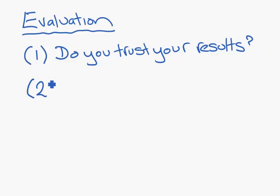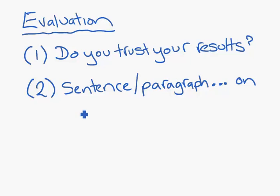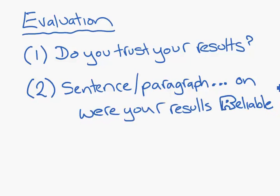The second bit is a sentence or paragraph on were your results reliable. Now, the reason I have done a big R here is because R helps remember what reliable is talking about. Did you have enough repeat? Did you repeat it five times on average so you trust it? Did you do it once? Did you do it 55 times? Did you repeat it enough that you have faith in your results?